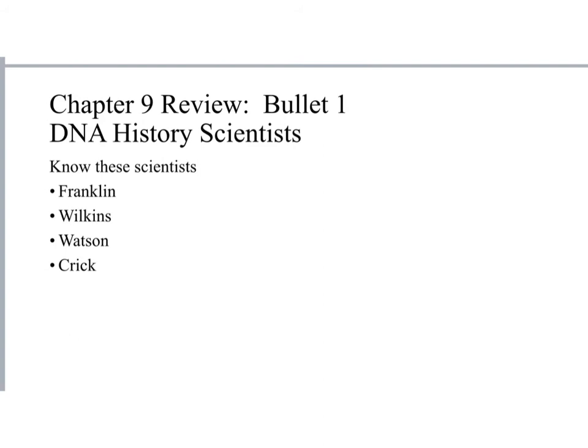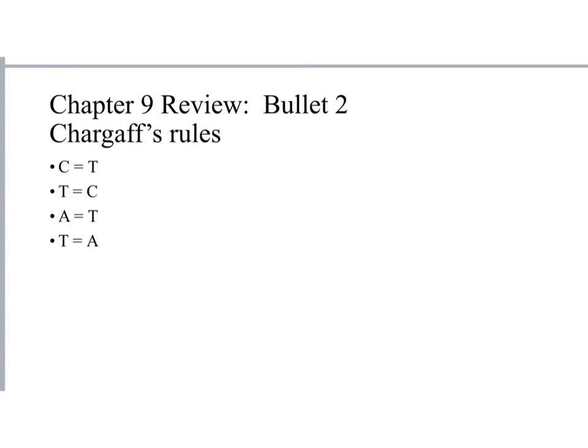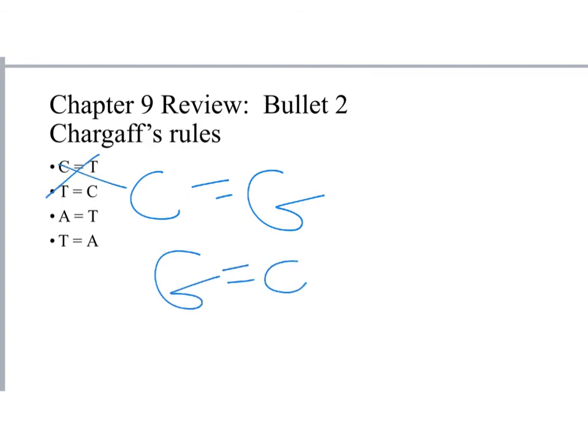For chapter 9 (DNA), know your scientists: Rosalind Franklin, Wilkins, Watson, and Crick. Also make sure you understand Chargaff's rules: C pairs with G, G pairs with C, A pairs with T, and T pairs with A.